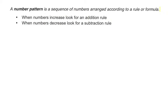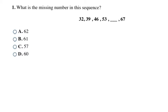Let's look at the definition of what a pattern is. A number pattern is a sequence or list of numbers arranged according to a rule or formula. When you see numbers increasing, you're going to look for an addition rule. When you see numbers decreasing, you're going to look for a subtraction rule.